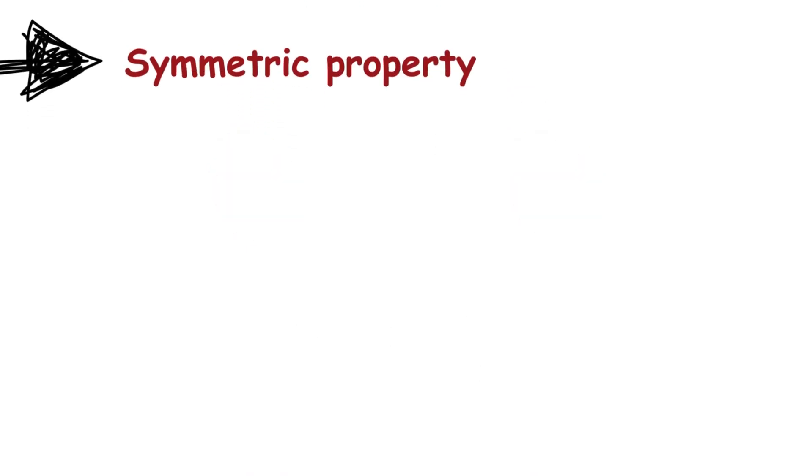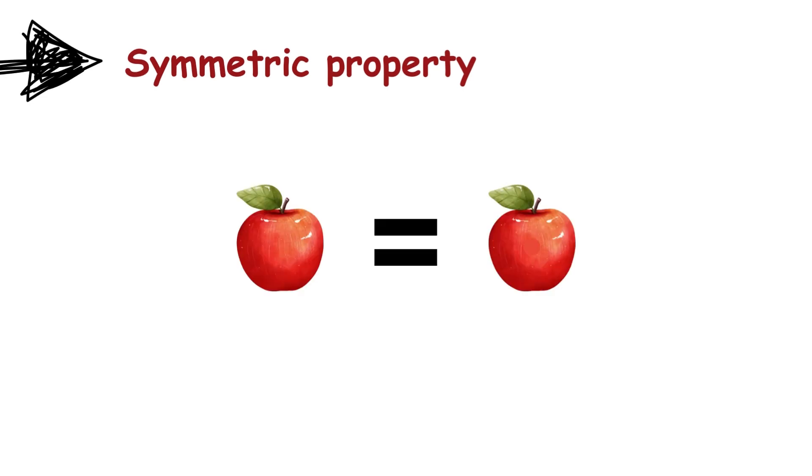Two, symmetric property. If something equals something else, then the second thing equals the first thing. For example, if two plus two equals four, then four equals two plus two.